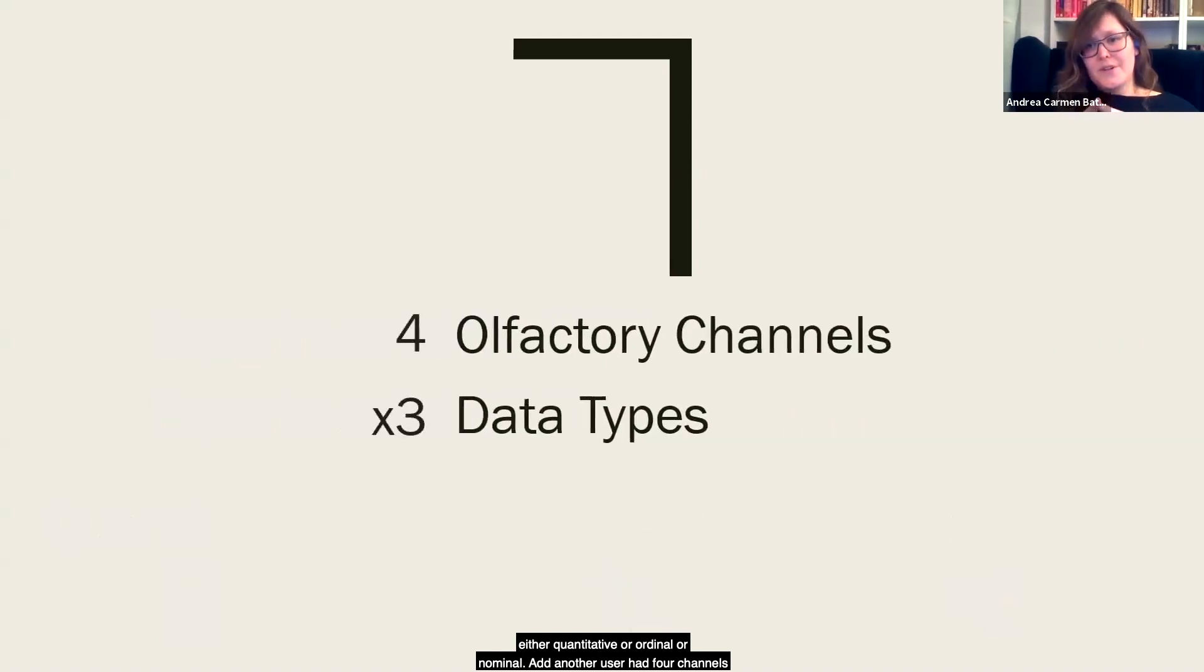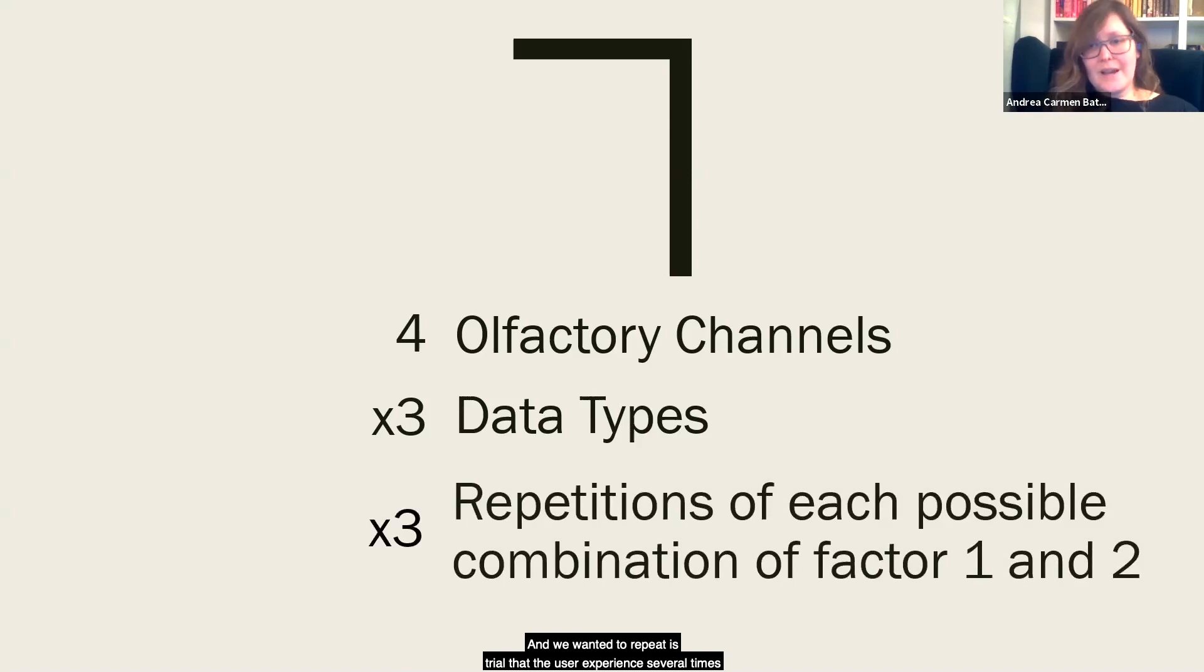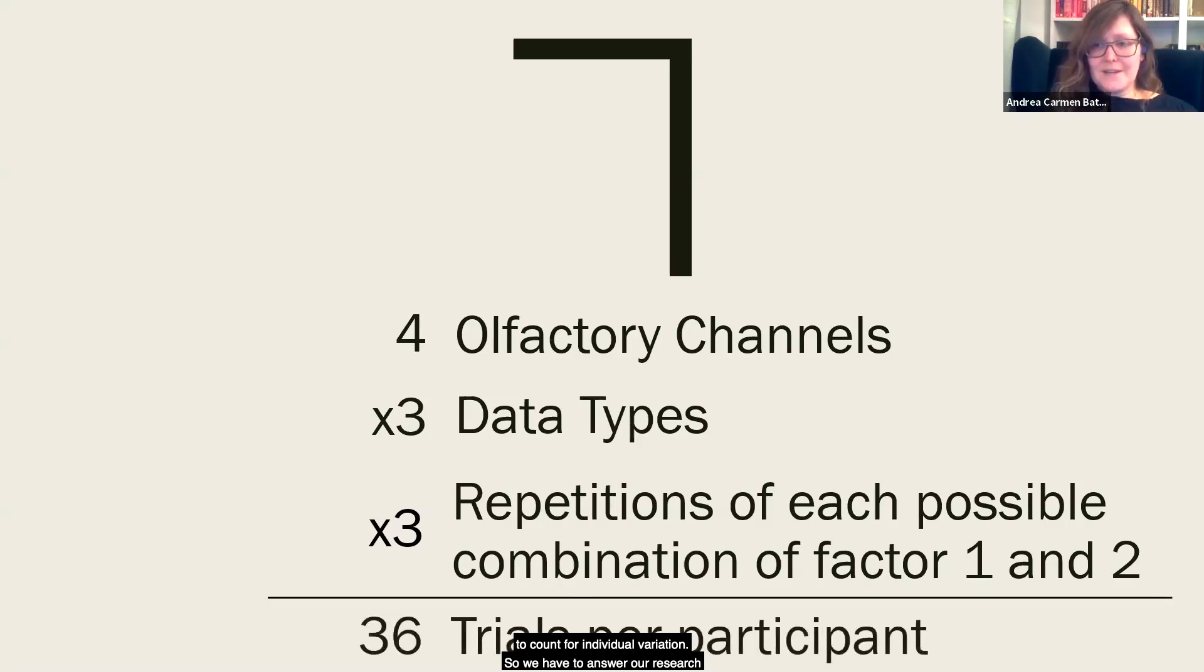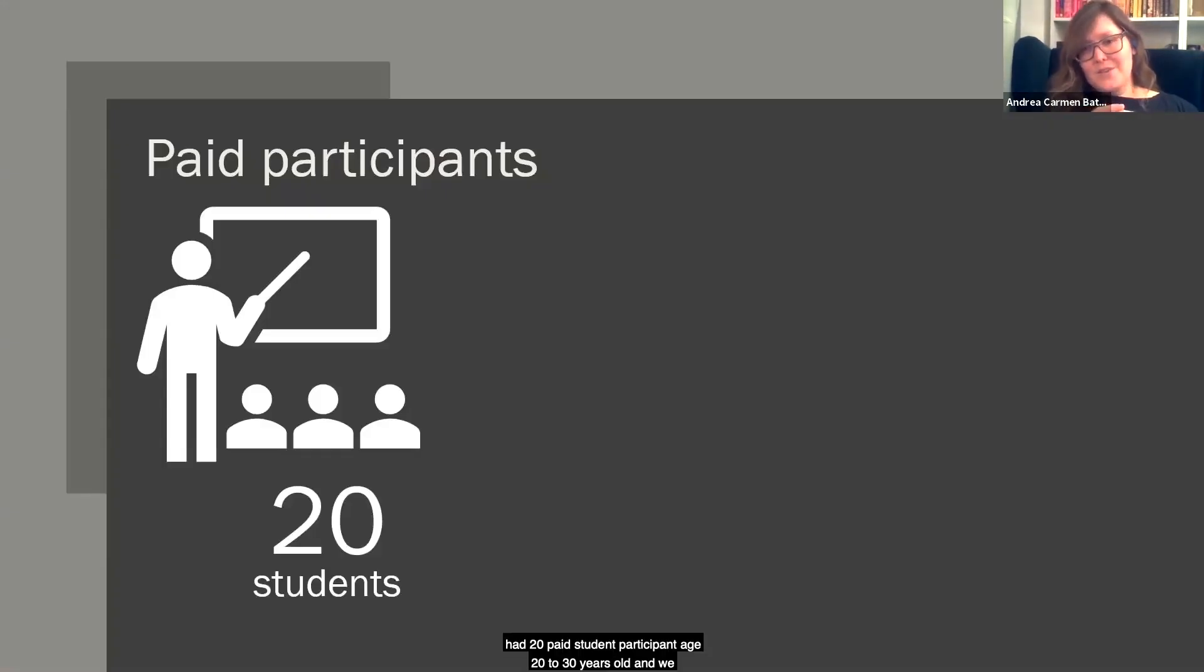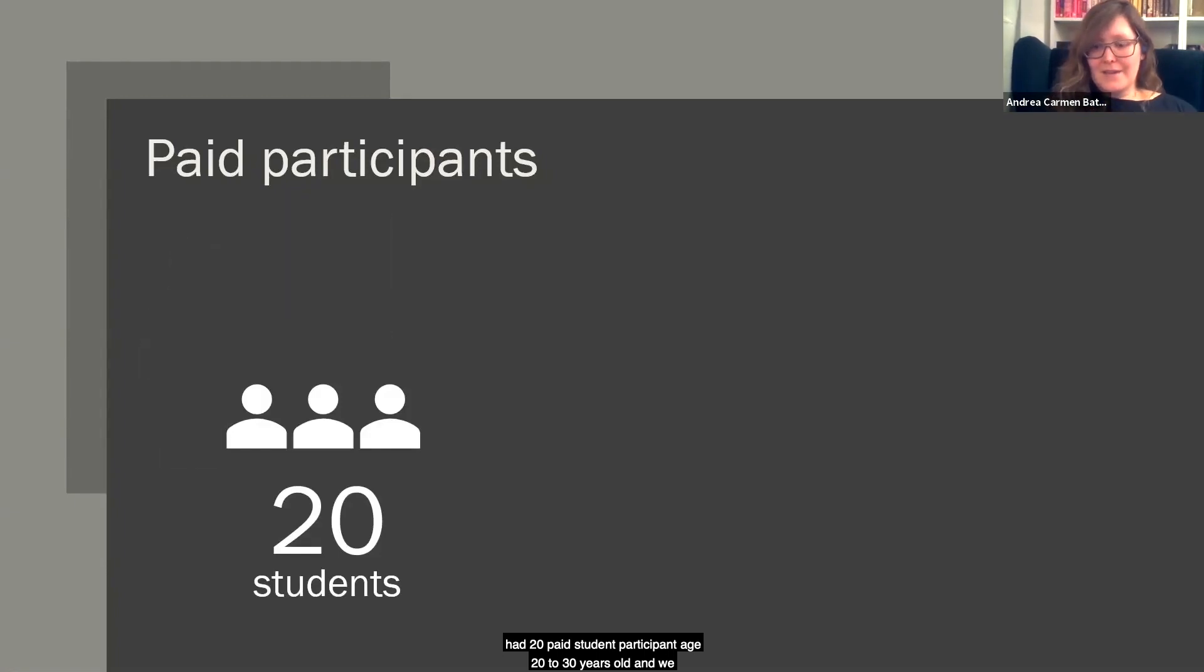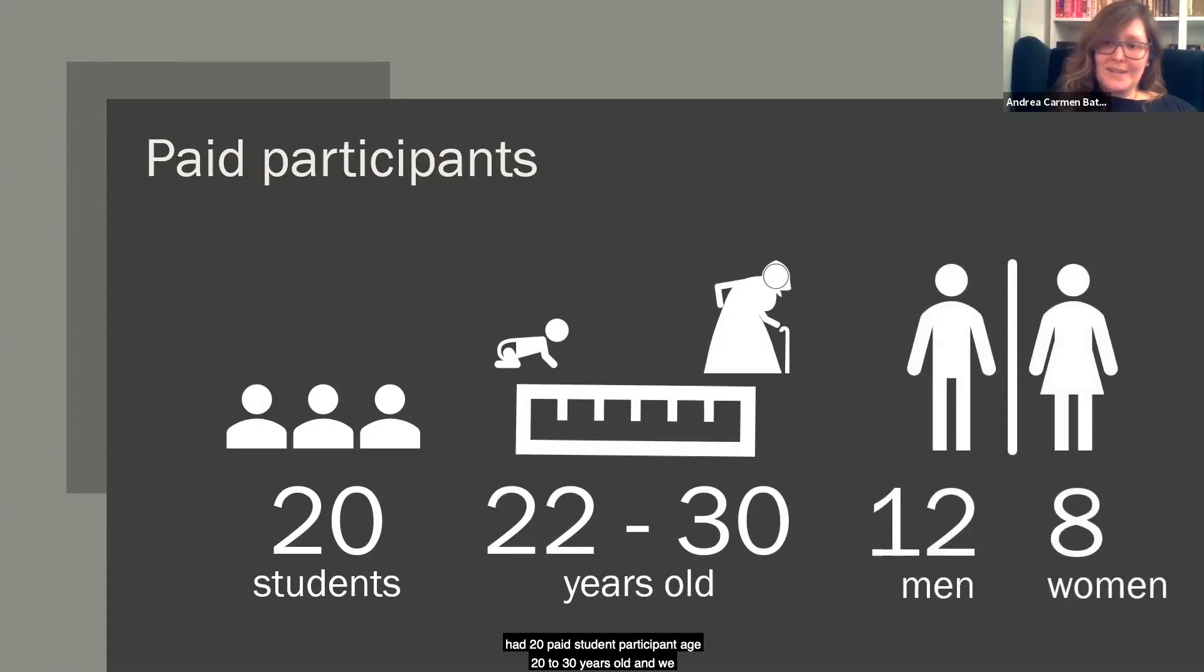So each task used an olfactory channel to represent data that was either quantitative or ordinal or nominal. In other words, the user had four channels and three different types of data that they needed to explore all combinations of. And we wanted to repeat each trial that the user experienced several times to account for individual variations. So we have 36 trials per participant to answer our research question, which is namely how effective these channels are at conveying these types of information to the user. So who are our participants? We had 20 paid student participants aged 22 to 30 years old, and 12 of them identified as men, 8 as women.